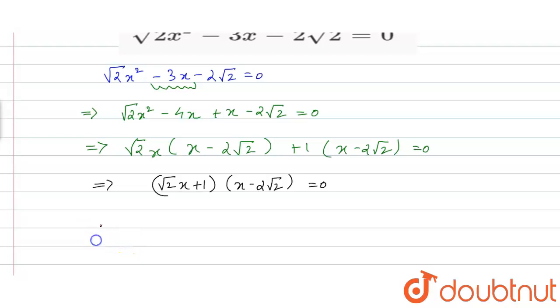So x will be coming. The value of x will be equal to minus 1 by root 2, and x is equal to 2 root 2.